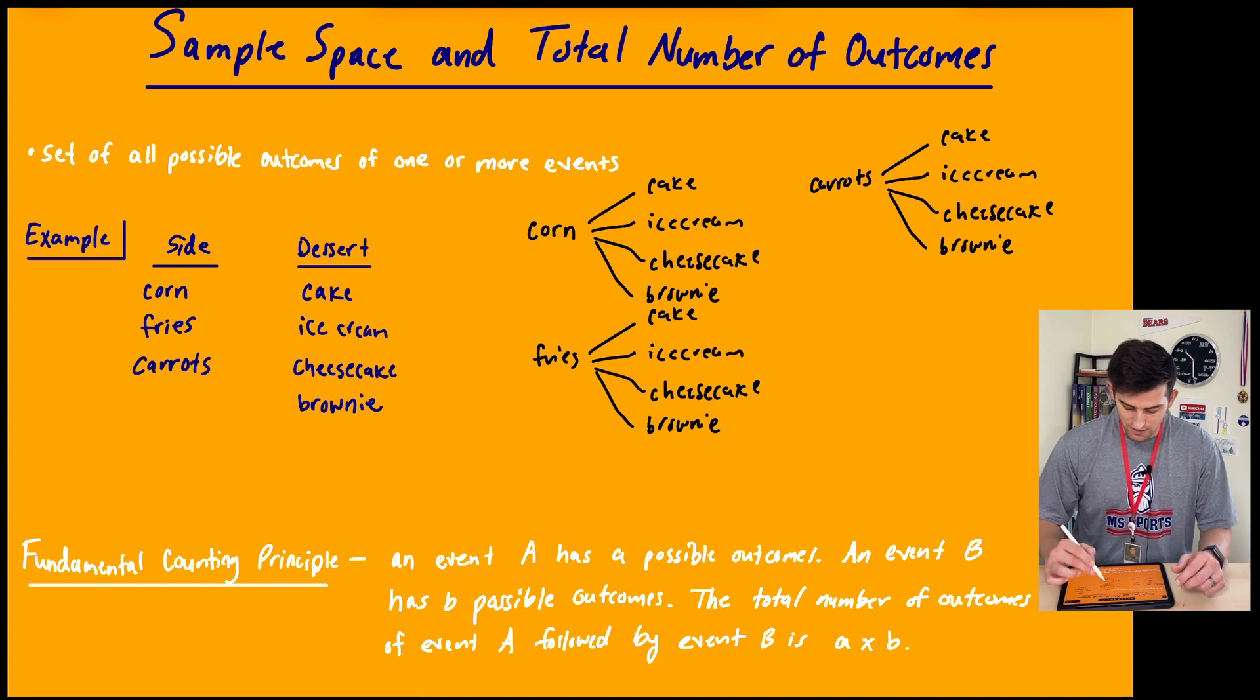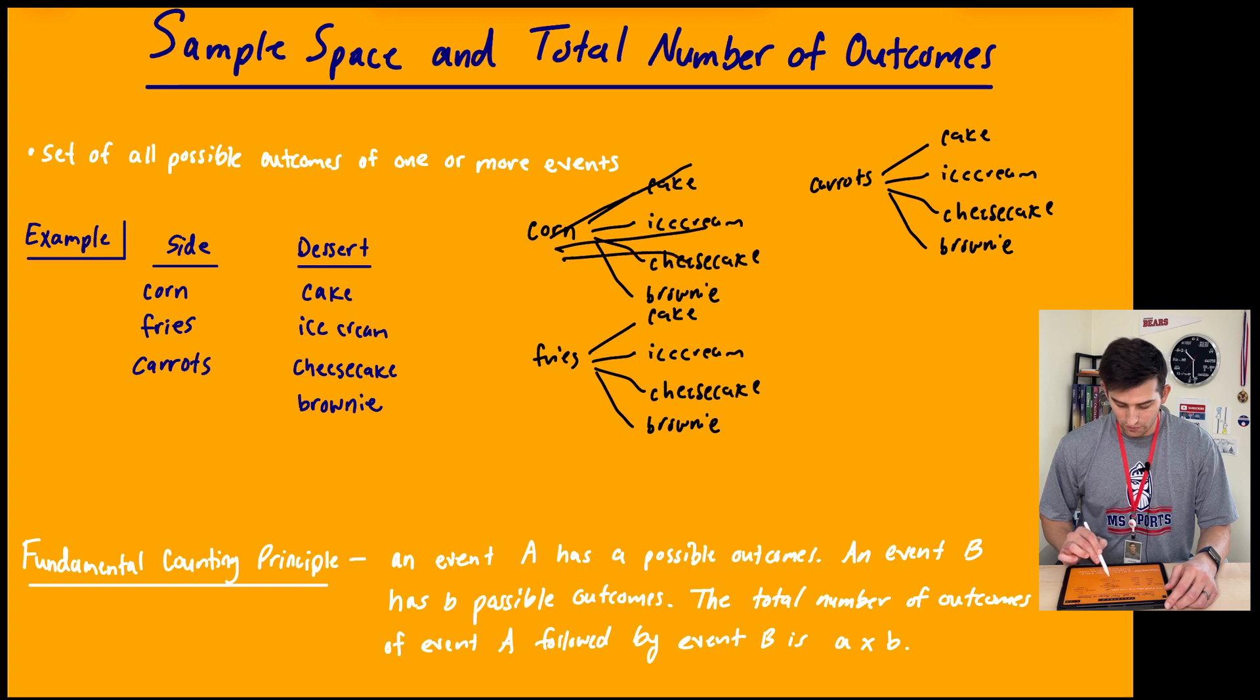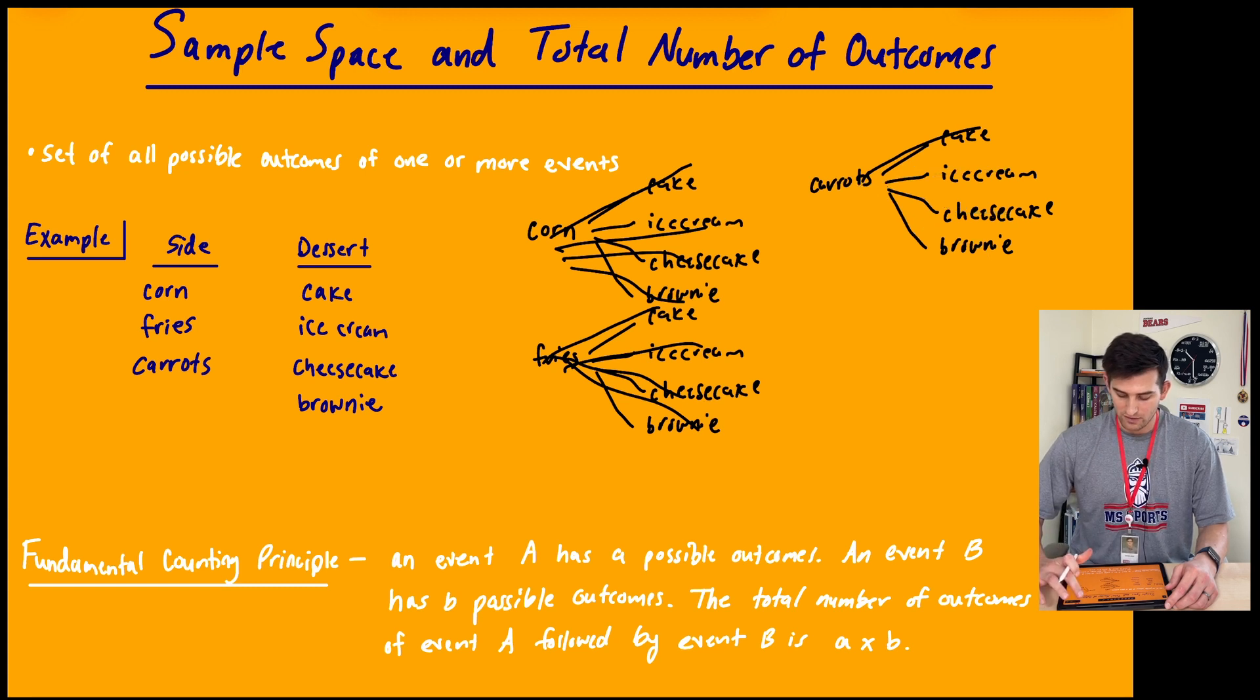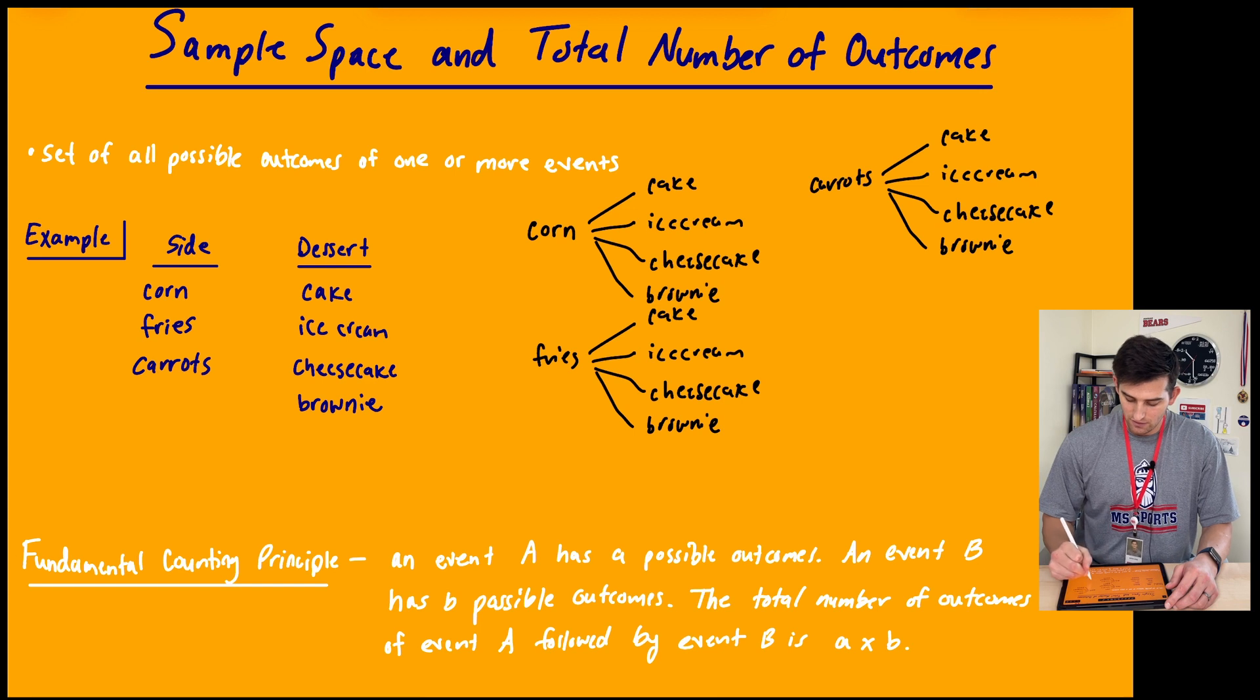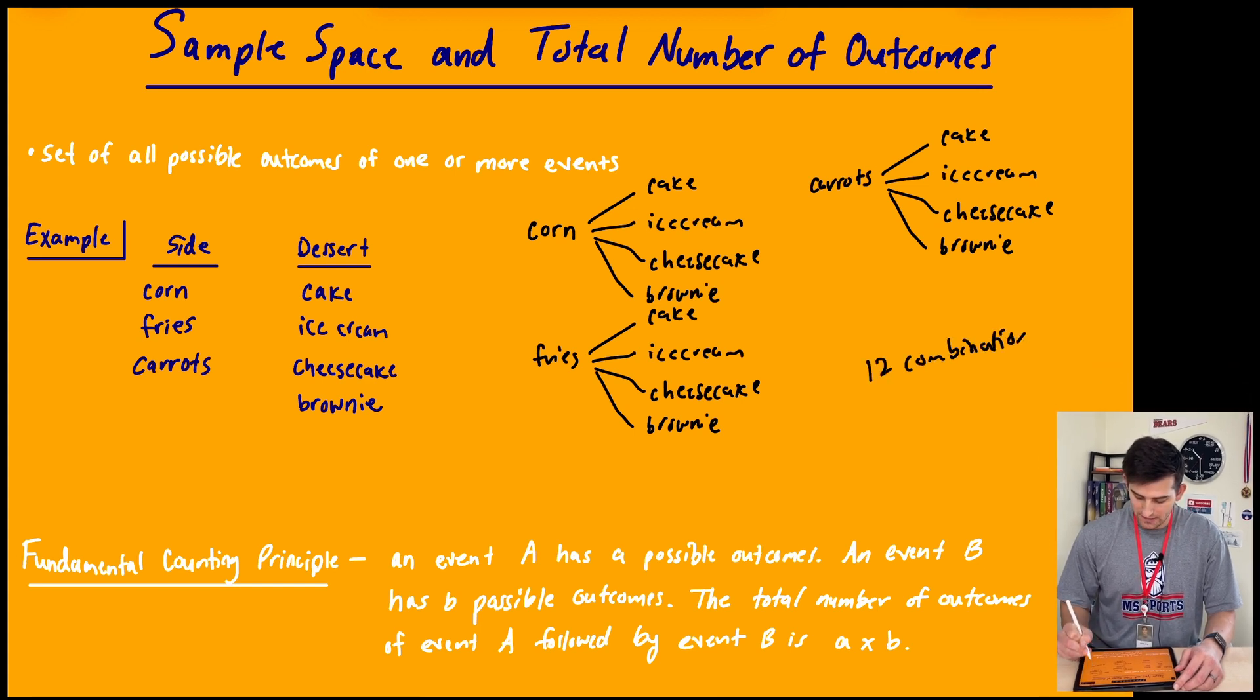So as you can see, we have four options for corn, four options for fries, and four options for carrots. So if we look, that'd be like one, two, three, four, five, six, seven, eight, nine, ten, eleven, and twelve, right? So we have twelve different possibilities or twelve combinations for our choices.